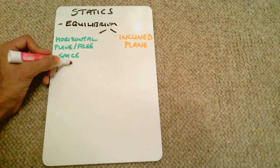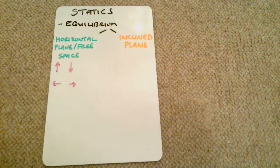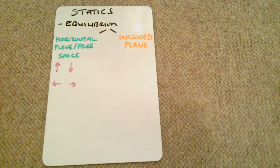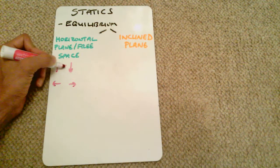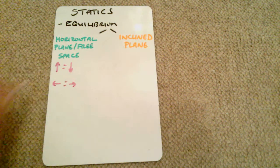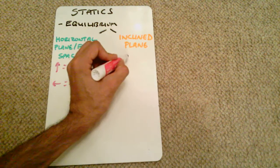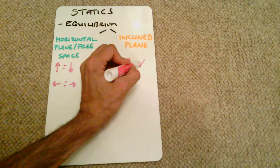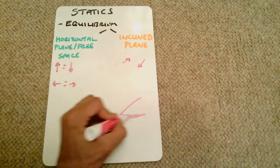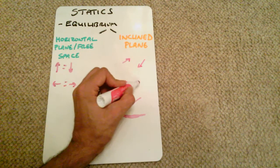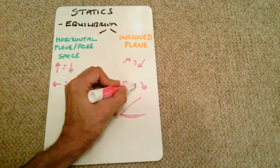On a horizontal plane you always look at forces up and down, or left and right. When something is in equilibrium or static, it means it's not moving or it's in a state of constant velocity. That links to Newton's first law — the acceleration equals zero and the forces are balanced, so forces up equal forces down, and forces left equal forces right. On an inclined plane, we look at forces parallel and perpendicular to the slope, and again these are equal to each other.